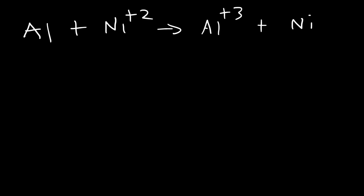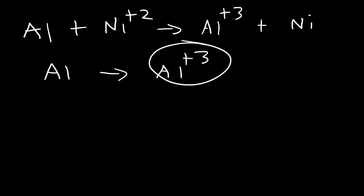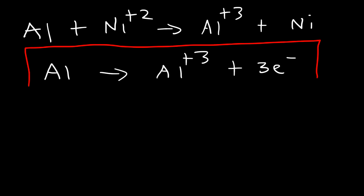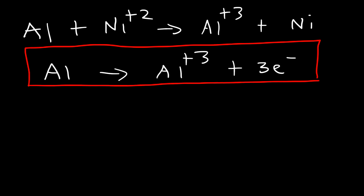So we're going to separate it into half reactions. The first one: aluminum becomes Al³⁺. In order to balance the charge, the net charge on the left is 0 and on the right is 3, so the difference is 3. We add 3 electrons to the side with the higher charge. The first half reaction is now balanced. Whenever the electrons are on the right side, this half reaction represents an oxidation reaction.